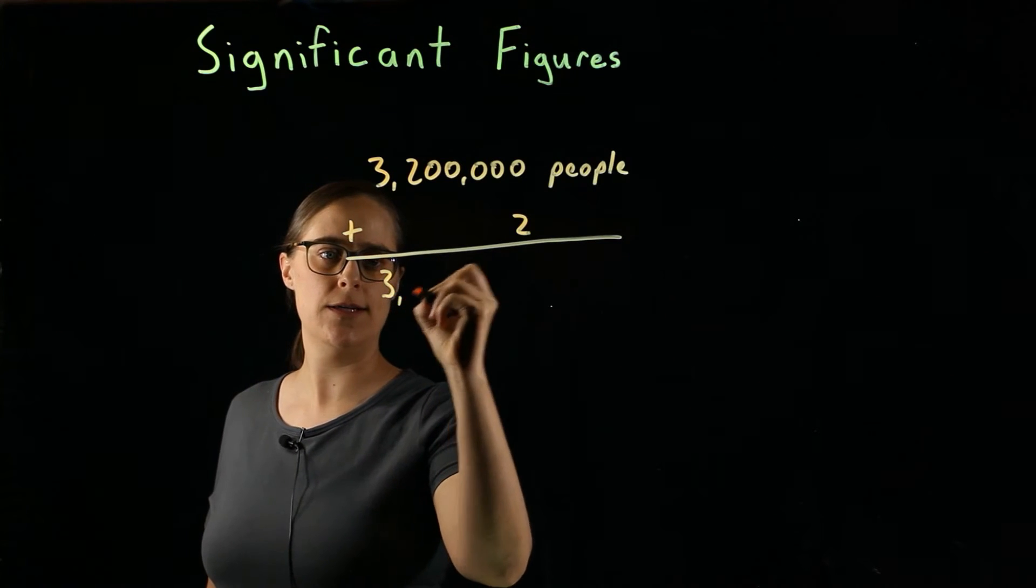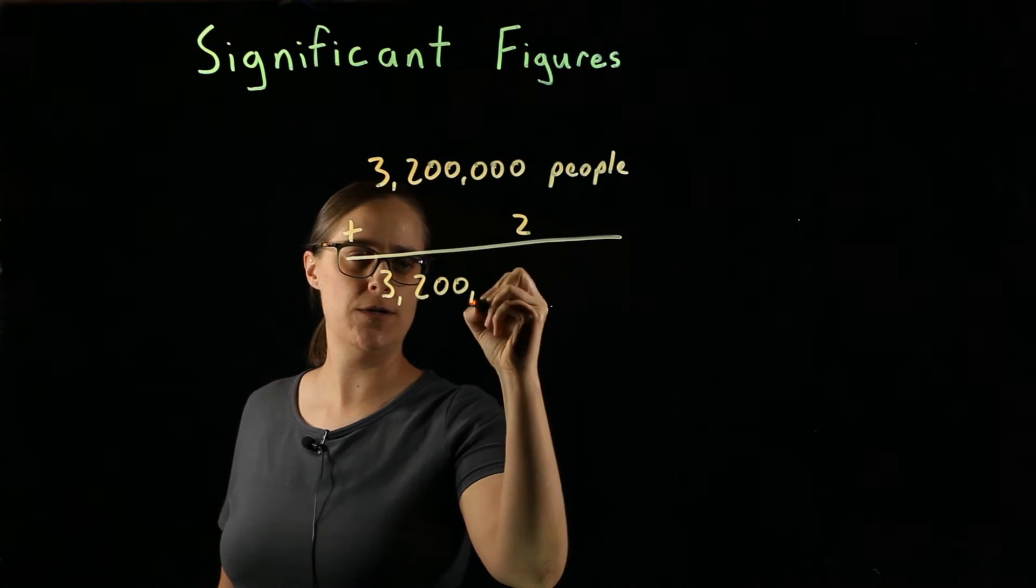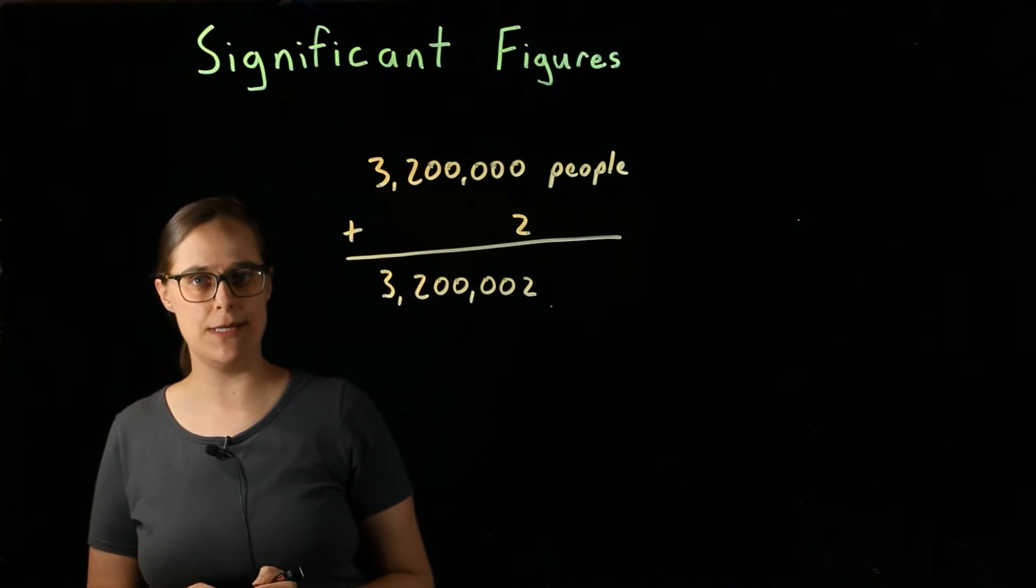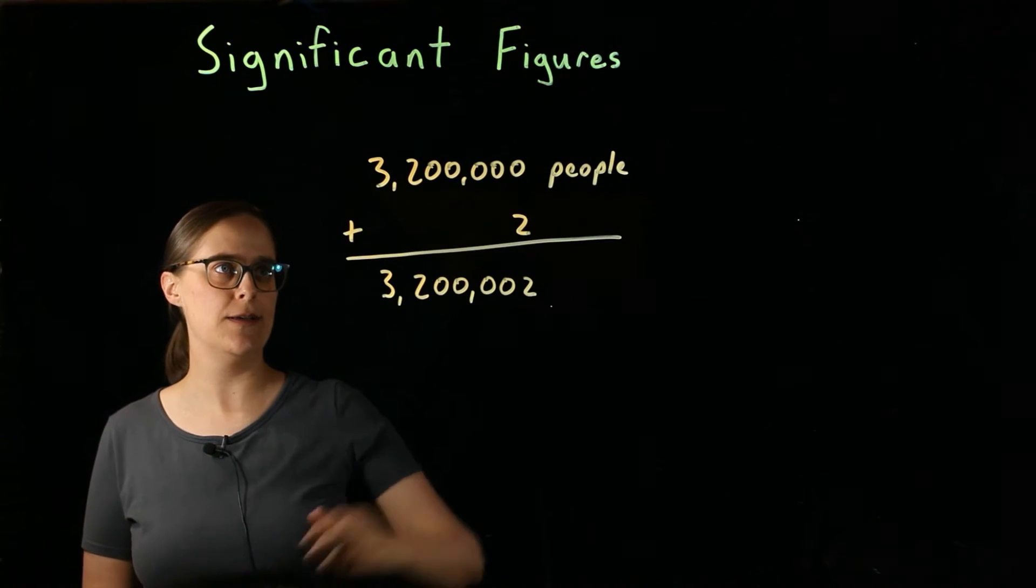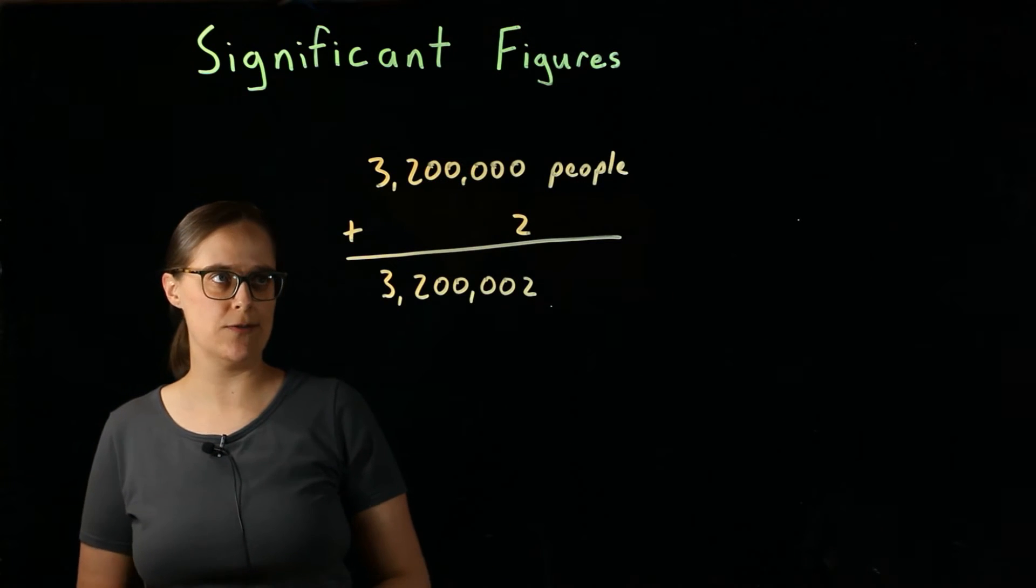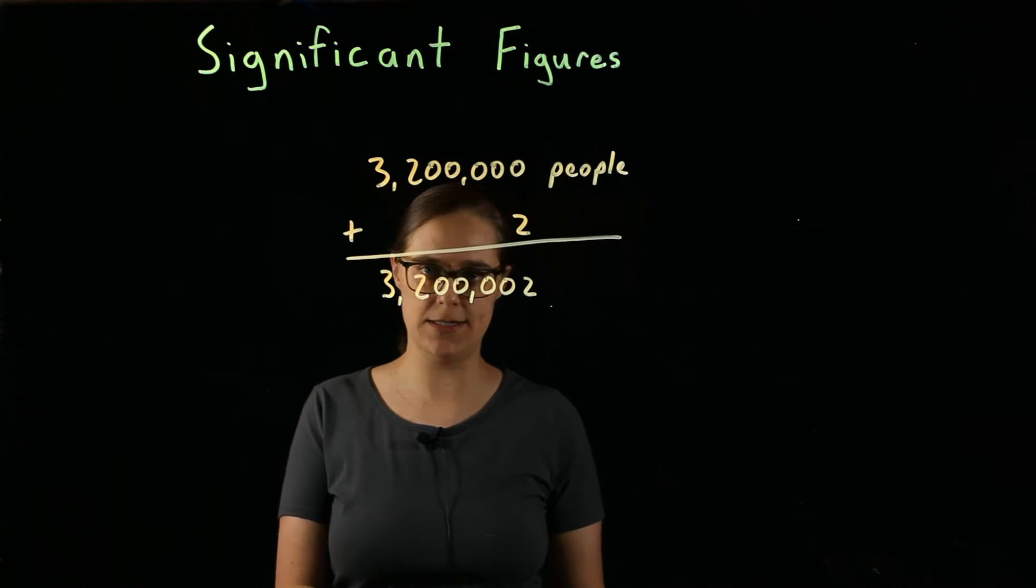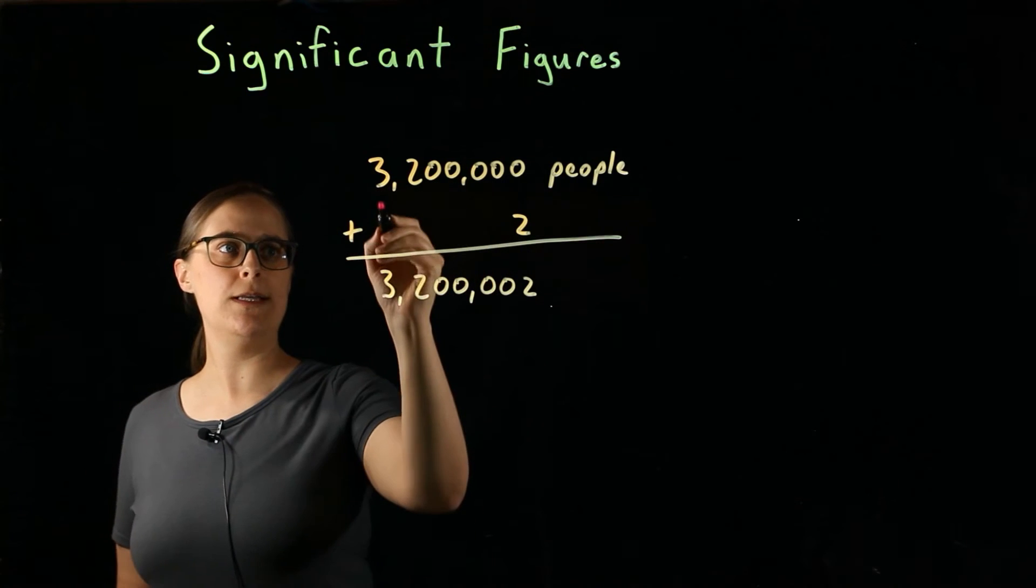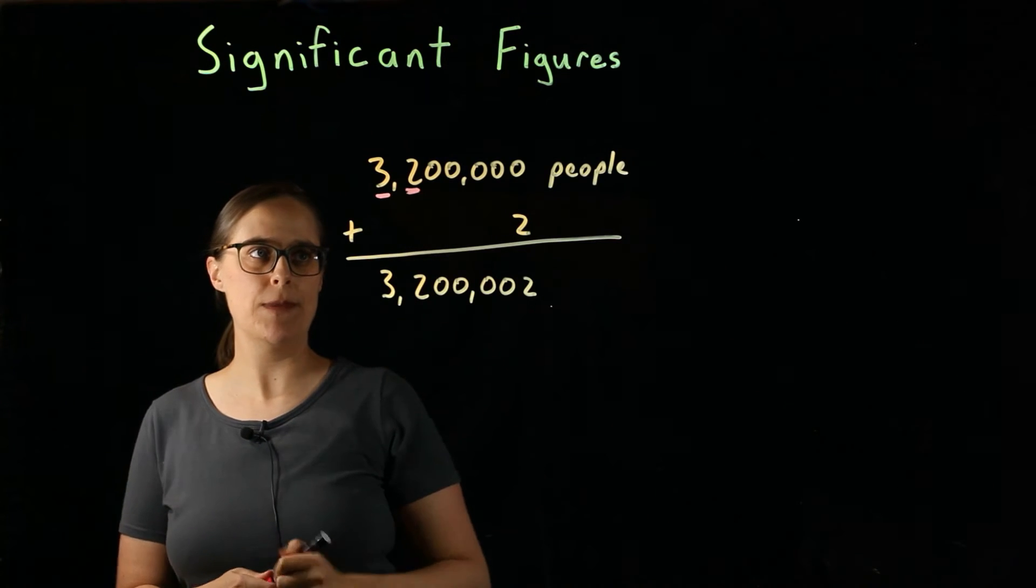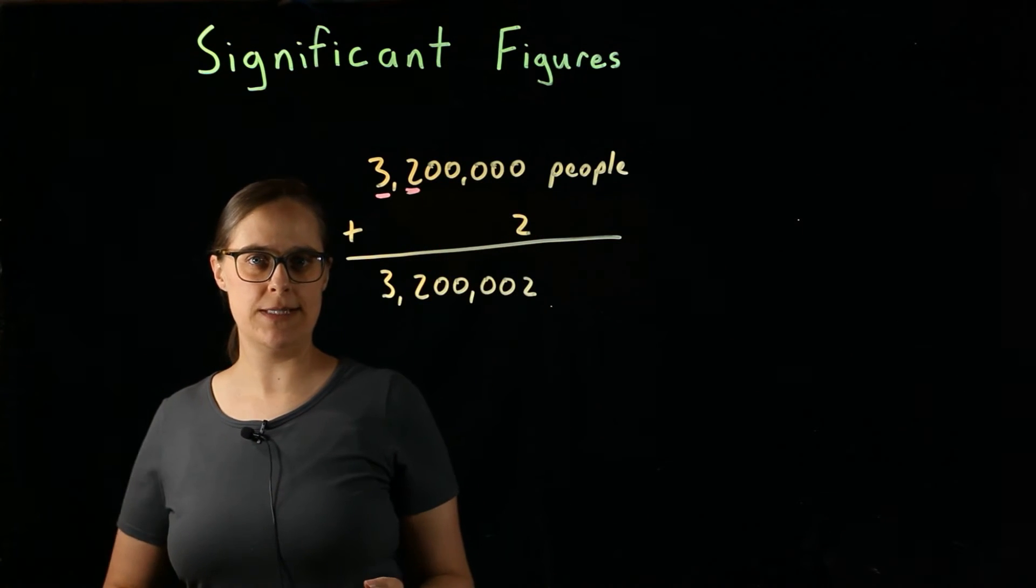Mathematically, you get 3,200,002. However, there is something massively wrong with what I just did. This number that I started with, 3,200,000, it is not a very precise number. I only know the 3 and the 2 at the beginning. These zeros are just placeholders.